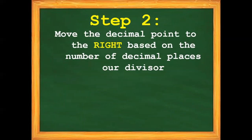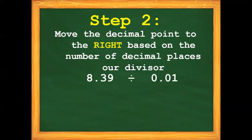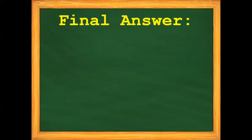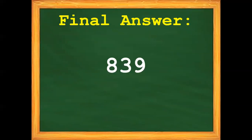Let's proceed with step number two: move the decimal point to the right based on the number of decimal places in our divisor. So for eight-and-thirty-nine-hundredths divided by one-hundredth, how many times do we need to move the decimal point? Twice — one and two. So our final answer for our second example is 839.